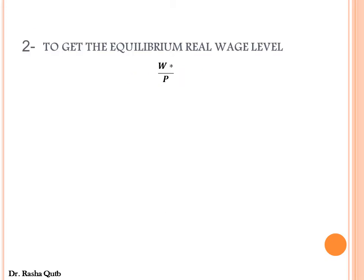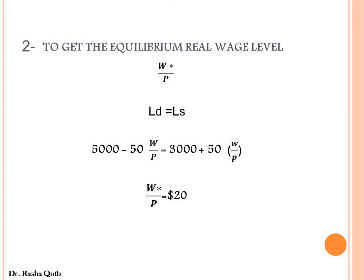Our second required point is to determine the equilibrium real wage level. The equilibrium real wage level occurs in the classical labor market when we equate the labor demand function with the labor supply function. By equating the labor demand function with labor supply, we get the real wage rate in the classical labor market, which is $20.